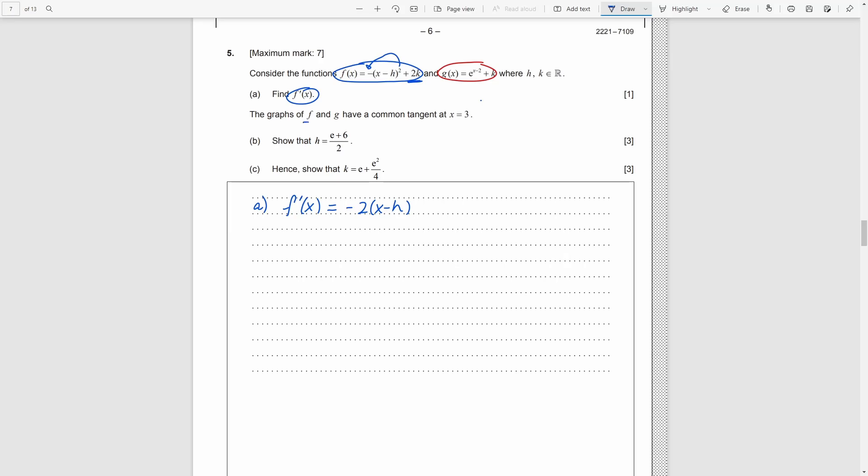Part B. F and g have common tangent at x equals 3. This is a very common type of questions in calculus. Common tangent means that their slopes are the same at that point. So, f dot 3 is equal to g dot 3. Also, they touch at that point. So, f(3) is equal to g(3).